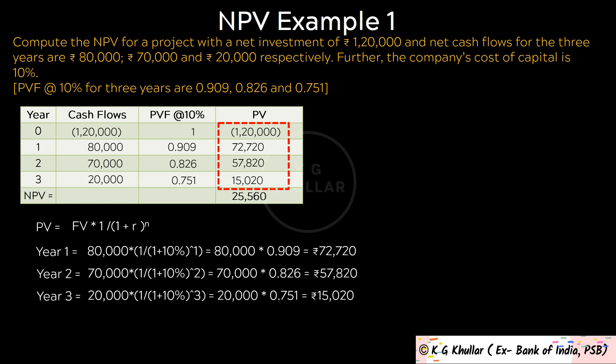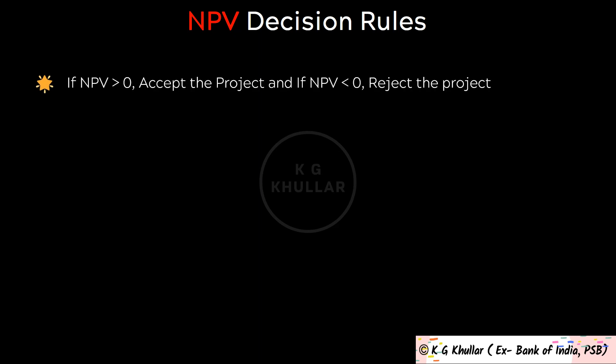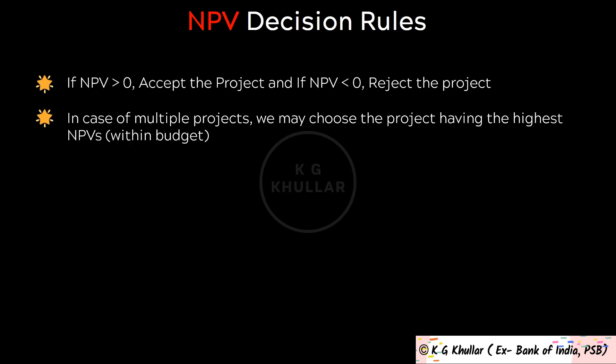The most important part is how we make decisions using NPV. Please remember these important decision rules: if NPV is greater than 0, accept the project. If NPV is less than 0, reject the project. In the case of multiple projects, choose the project having the highest NPV. For our example, since the project has a positive NPV of Rs. 25,560, this project can be accepted.